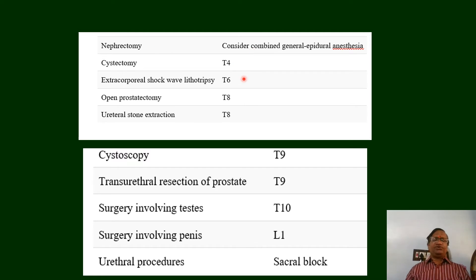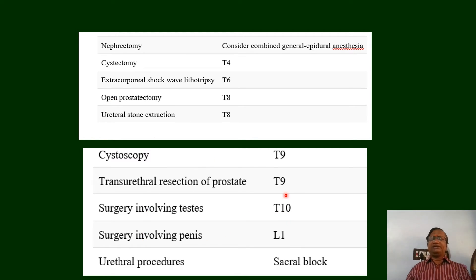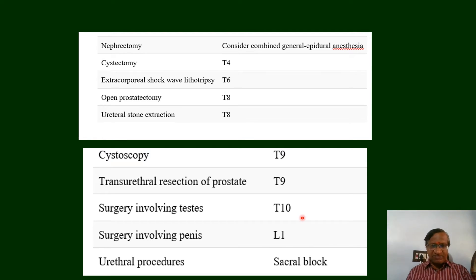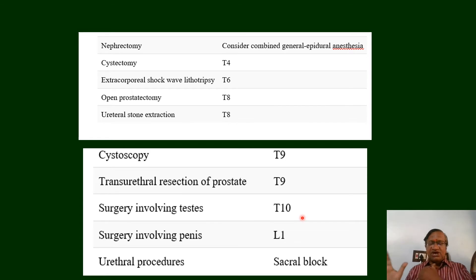For nephrectomy and cystectomy the level needed is T4; ESWL T6; open prostatectomy and urethral stone T8. For T10 level: 2 thoracic + 5 lumbar + 5 sacral = 12 segments to block. At 1 to 1.5 ml per segment, that means 13 to 14 ml of 0.5% bupivacaine is needed for nephrectomy anesthesia.